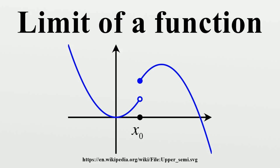Imagine a person walking over a landscape represented by the graph of y equals f. Her horizontal position is measured by the value of x, much like the position given by a map of the land or by a global positioning system. Her altitude is given by the coordinate y. She is walking towards the horizontal position given by x equals p. As she gets closer and closer to it, she notices that her altitude approaches L.